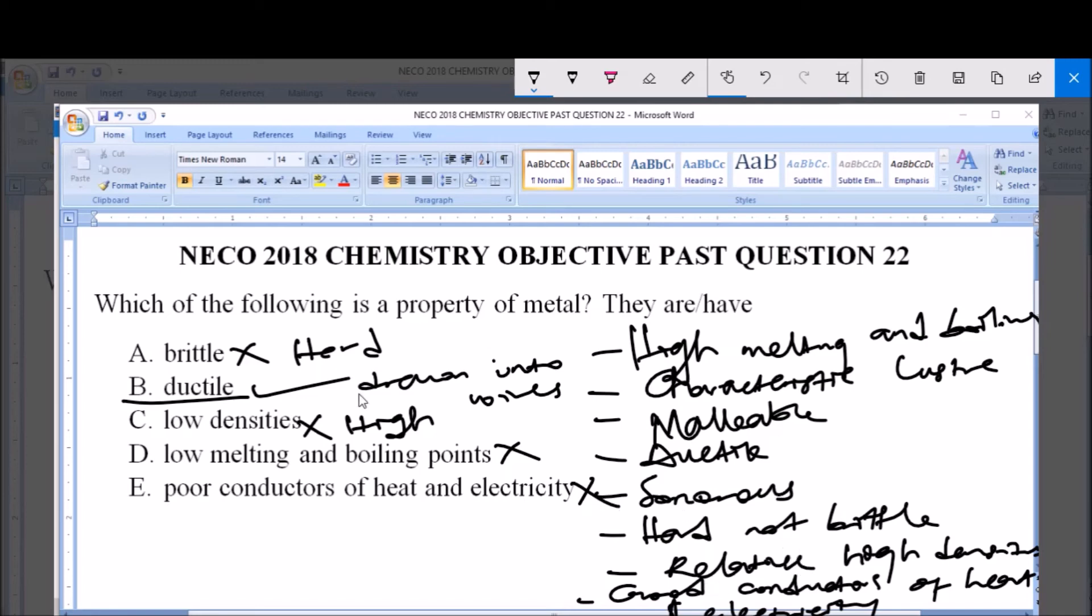So the answer to this question is option B. This is the only property of metal stated in these options.